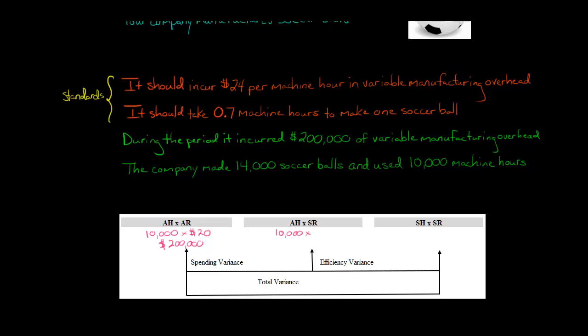Now the standard rate. What should we have incurred for variable manufacturing overhead? $24 per machine hour. So it should have been $24. So if we take $24 times 10,000, that's $240,000.